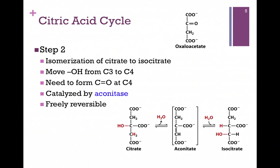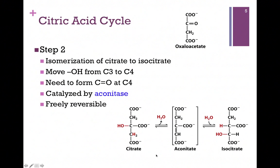Now we're ready for step two. For your convenience, I've added the oxaloacetate structure at the top of the screen. Remember, we have to regenerate that molecule, and we're starting with citrate. We're going to isomerize citrate to isocitrate — that is, remove the hydroxyl group from carbon number three and add it to carbon number four. We need this because we eventually need to form a carbonyl group at carbon number four, and there isn't an oxygen atom at that position in citrate. We first dehydrate the molecule, creating a double bond; that intermediate in brackets is aconitate. Then we add another water molecule with the OH now on position four, accomplishing our goal of moving the hydroxyl group to form our product, isocitrate.